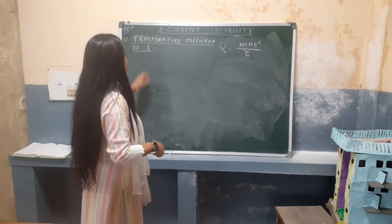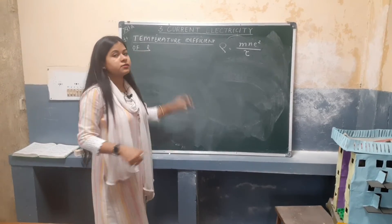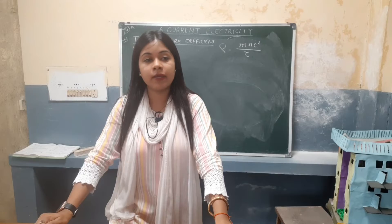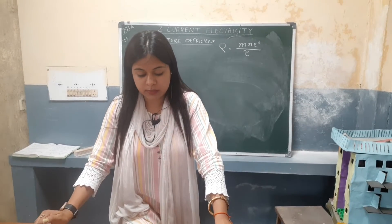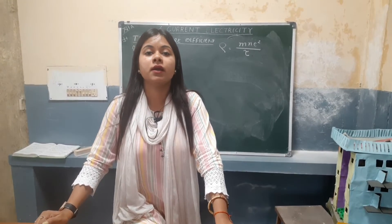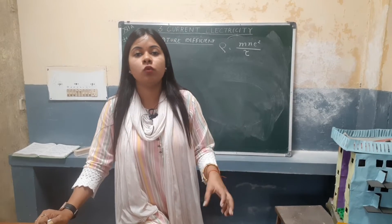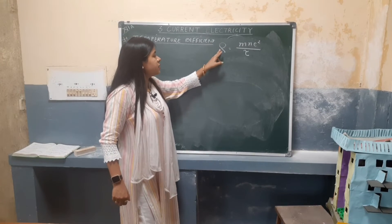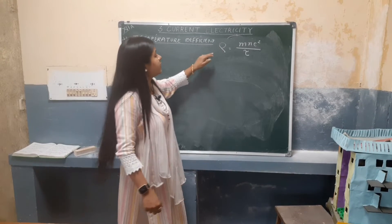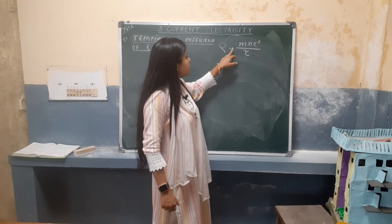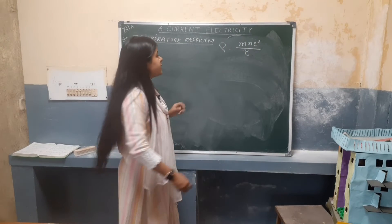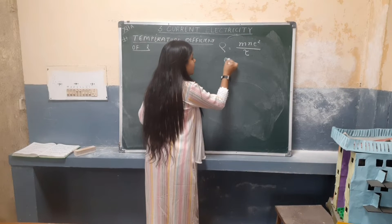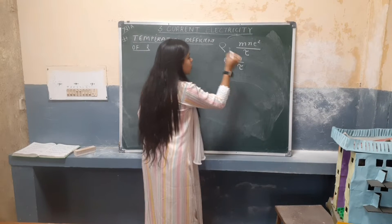Now we are going to discuss the temperature coefficient of resistivity. Resistivity is a property of a conductor — it gives us an understanding of how much charge flows through the conductor. We have derived that resistivity ρ = m/(ne²τ), where τ is the relaxation time. So resistivity is inversely proportional to tau.